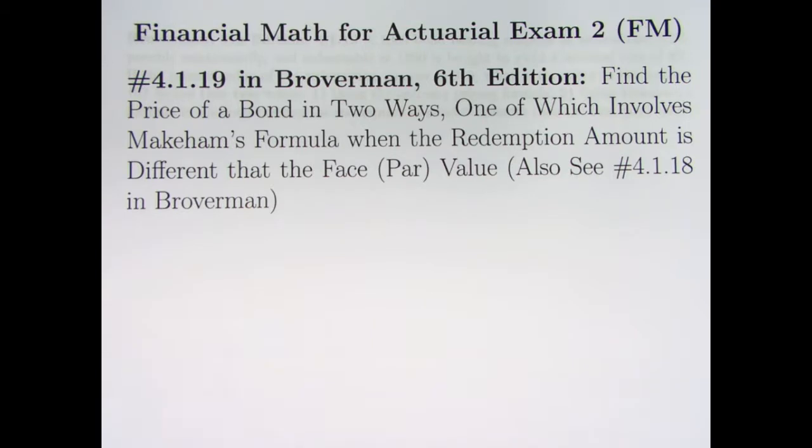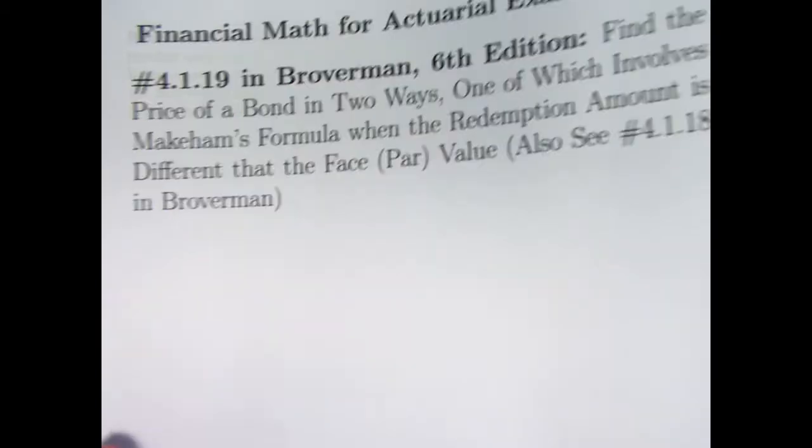We'll be finding the price of a bond, and I'm going to modify the problem a little bit in two ways. I'm going to say to do it in two ways, one of which involves Makeham's Formula. But here's something different: when the redemption amount is different than the face or par value. You can also see problem 4.1.18 in Broverman's book to compare.